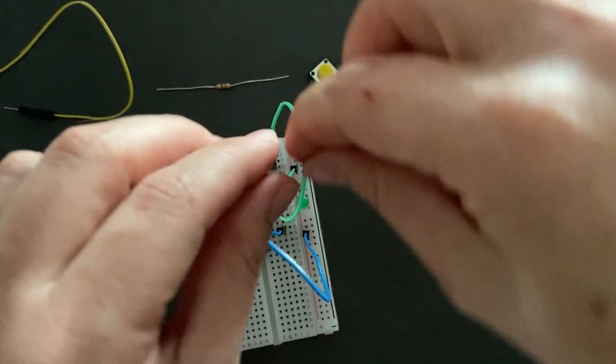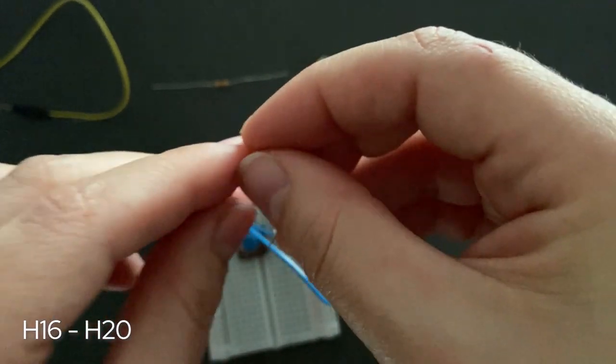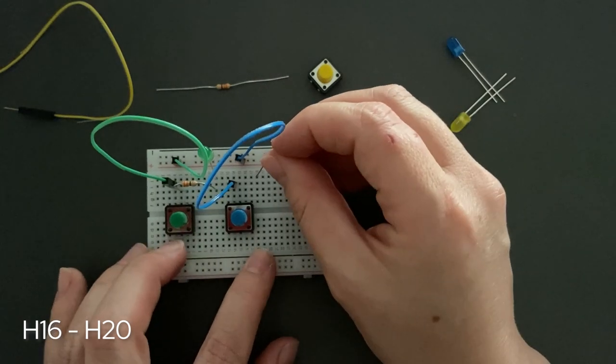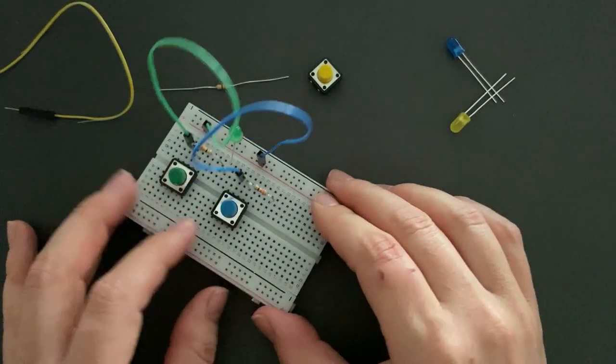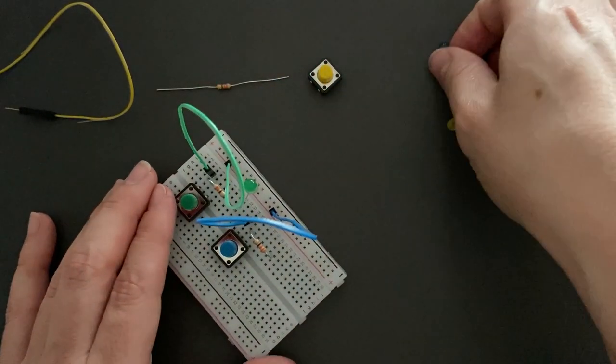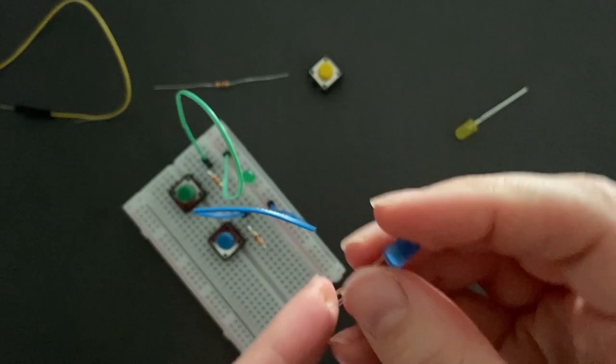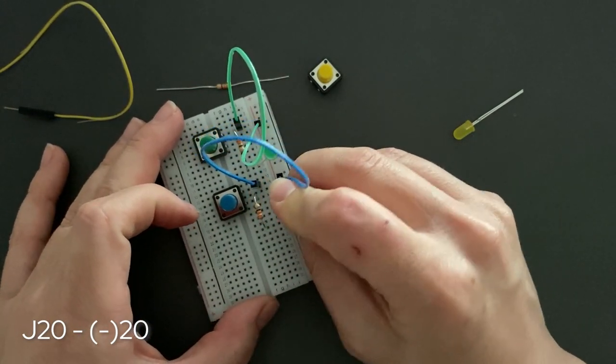Let's grab another resistor, bend the sides to make a U-shape, and connect from H16 to H20. Once again, remember that our LEDs are polarized, so place the longer leg into J20, and the shorter into negative power rail 20.